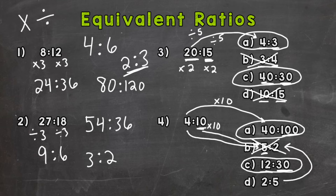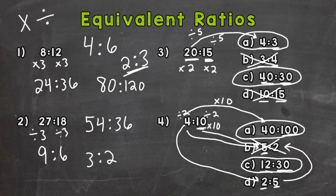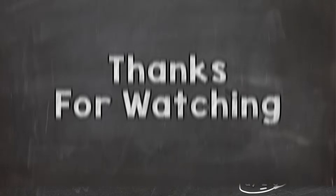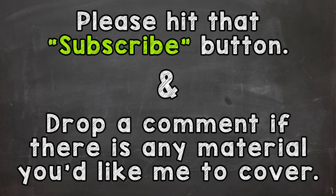Now D — 2 to 5 — is similar to choice B, involving a 2 and a 5 but in a different order. Let's check: 4 divided by 2 gives me 2, and 10 divided by 2 gives me 5. I can divide both by 2 and get 2 to 5, so D is equivalent. There you have it — equivalent ratios! Hopefully that helped. Thanks so much for watching. Until next time, peace!